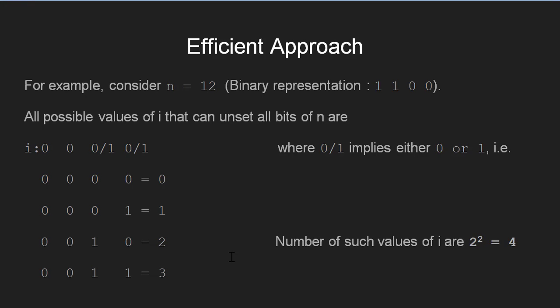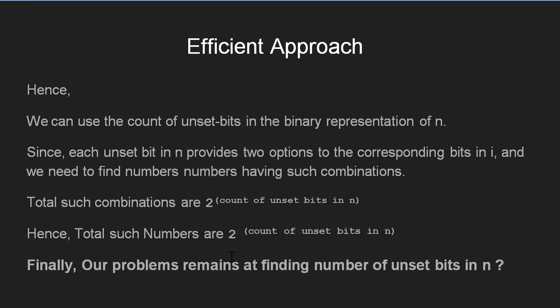Hence we get that for the unset bits in n we can have two options, either 0 or 1, which leaves us with 2 raised to the power count of such bits as the answer to the problem. Hence finally our problem is reduced to finding the number of unset bits in n and then computing 2 raised to the power count of such unset bits and returning that value. So let's see how we can implement it.